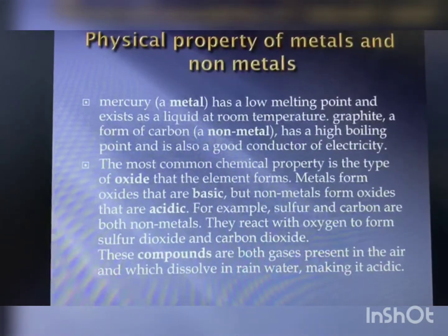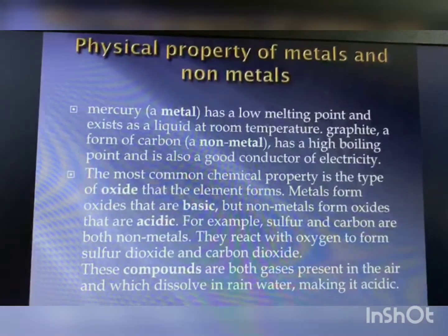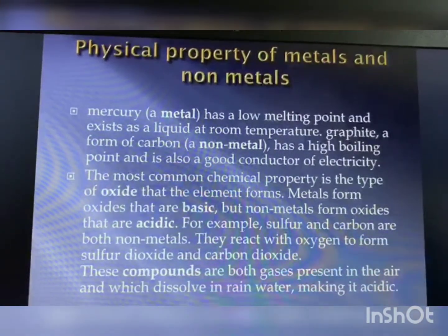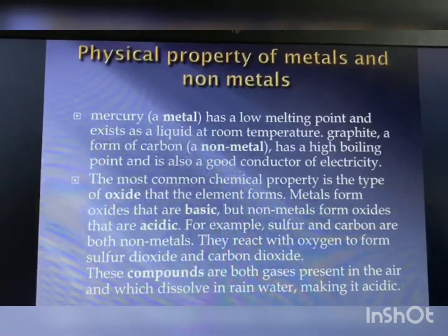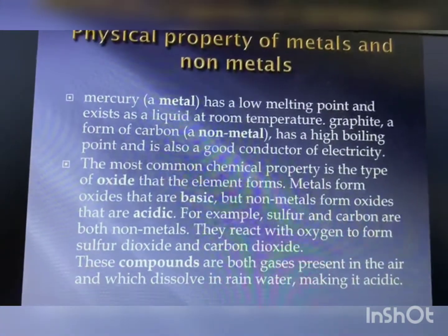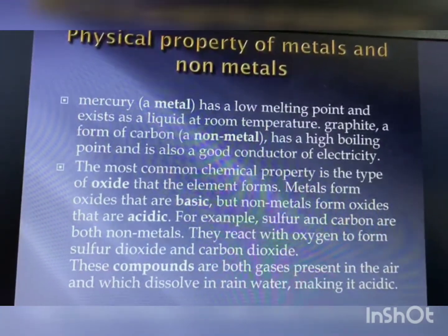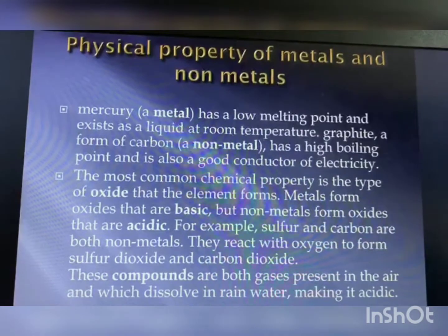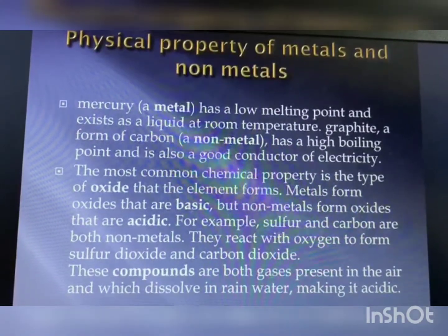All metals except mercury exist as solids at room temperature. Metals generally have high melting points, but gallium and cesium have very low melting points — these metals will melt if you keep them on your palm. Iodine is a nonmetal but is lustrous. Diamond, an allotrope of carbon, is the hardest natural substance known with a very high melting and boiling point. Graphite, another allotrope of carbon, is a conductor of electricity. Alkali metals — lithium, sodium, potassium — are so soft they can be cut with a knife, and they have low densities and low melting points.